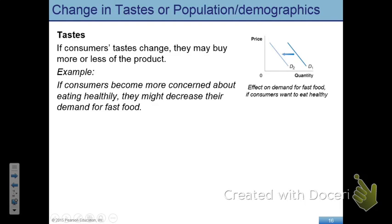So we covered income, we covered prices of related goods — in that context we covered the distinction between normal and inferior goods, and also the distinction between substitutes and complementary goods. But to most economists, these are not the most important issue when we think about demand. Probably the most important factor that affects your demand is your taste.